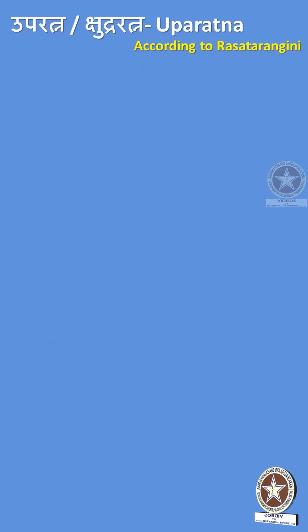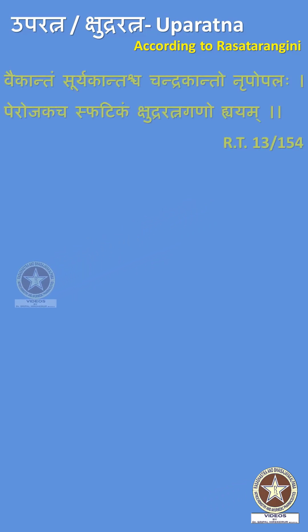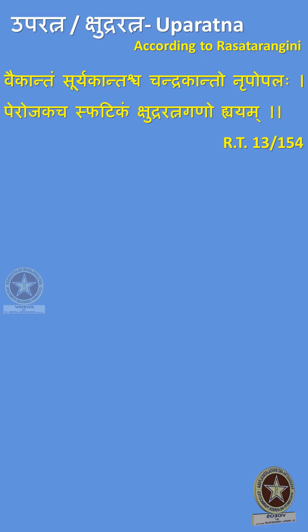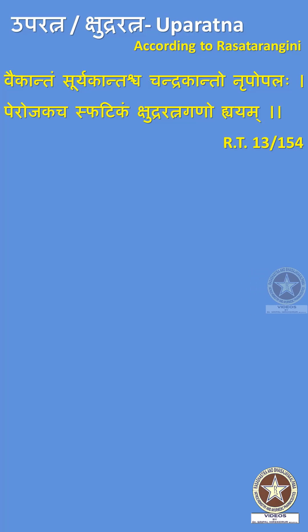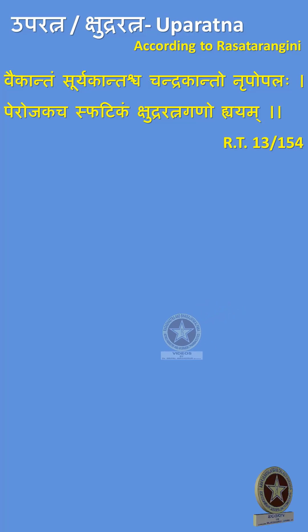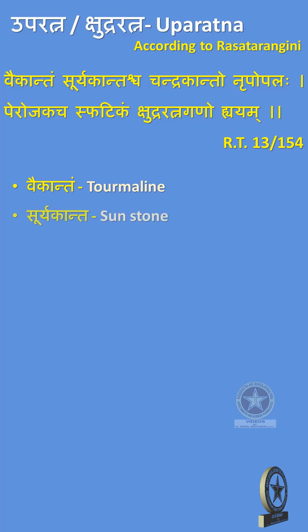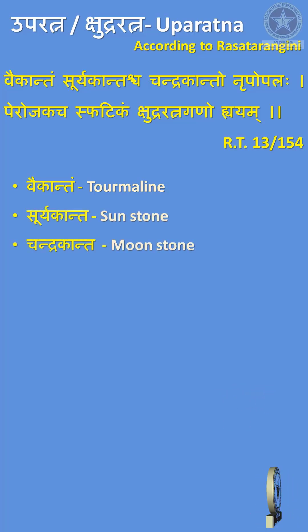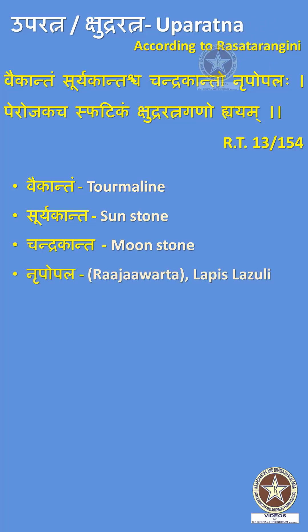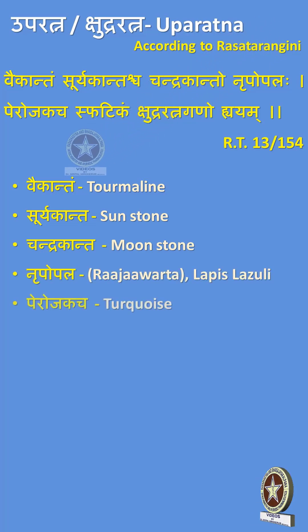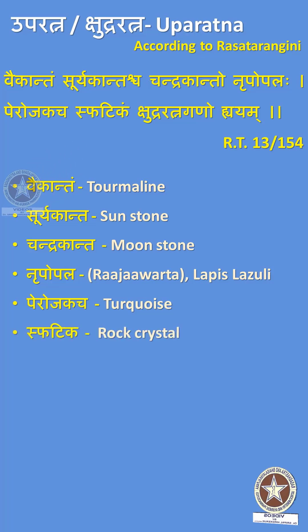Next comes Uparatnas. Rasatarangini has named Uparatna as Shudraratna, meaning inferior to Ratnas. Reference: Chapter 13 Shloka 154. The Uparatna category includes: Vaikrantam (Tourmaline), Suryakanta (Sunstone), Chandrakanta (Moonstone), Drupopala or Rajavarta (Lapis Lazuli), Pyrojaka (Turquoise), and Spatika (Rock Crystal).